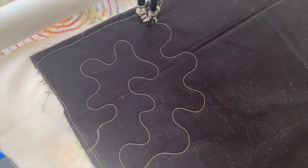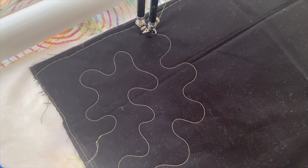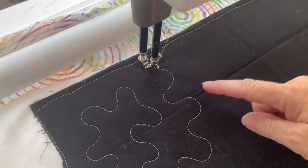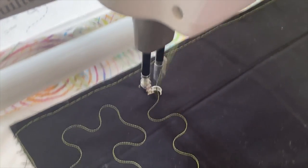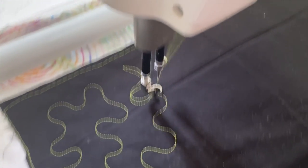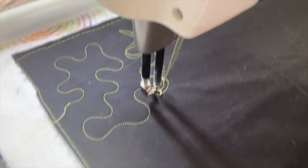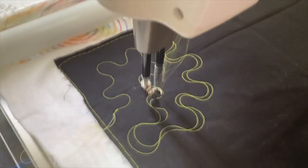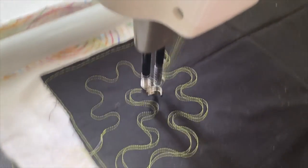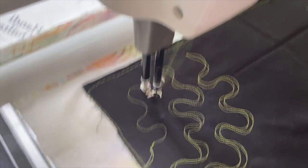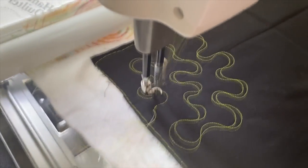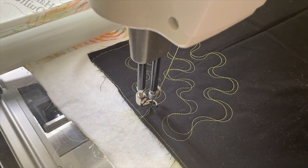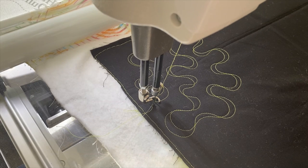So I think that looks pretty nice and I know that everybody can do that. So let's try and dress it up a little bit. Design two was the one where we echoed, so let's go ahead and do that and cross over. And doesn't that look nice. So that's number two and there you go, two ways to do a stipple or a meander.